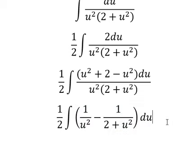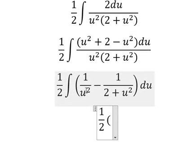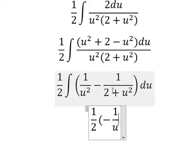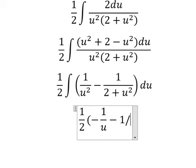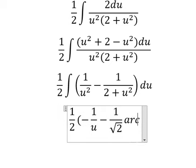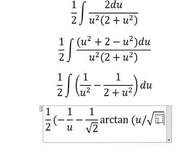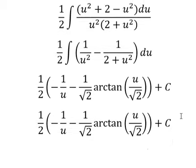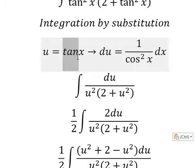And now we compute the final answer. The integral of one over u squared gives negative one over u. The integral of one over two plus u squared gives negative one over the square root of two, times arctan of u over the square root of two. We add constant C, and substituting back u equals tan x, this is our final answer.